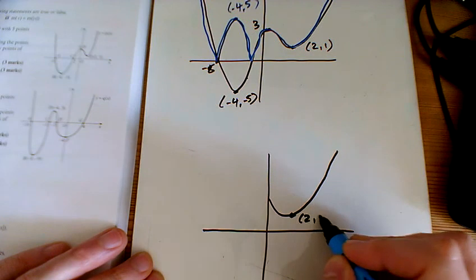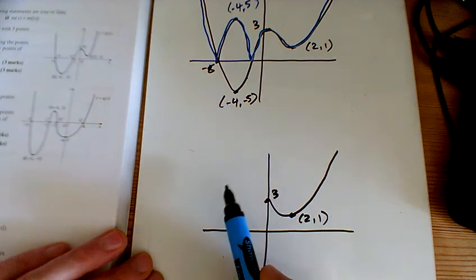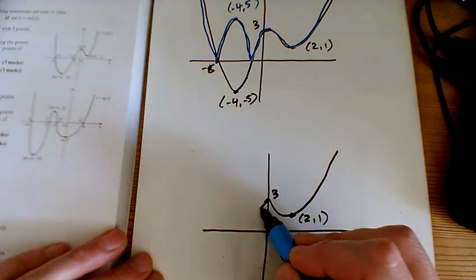That point there is 2, 1. It still crosses here at 3. And then we want to flip this bit over to reflect it across.